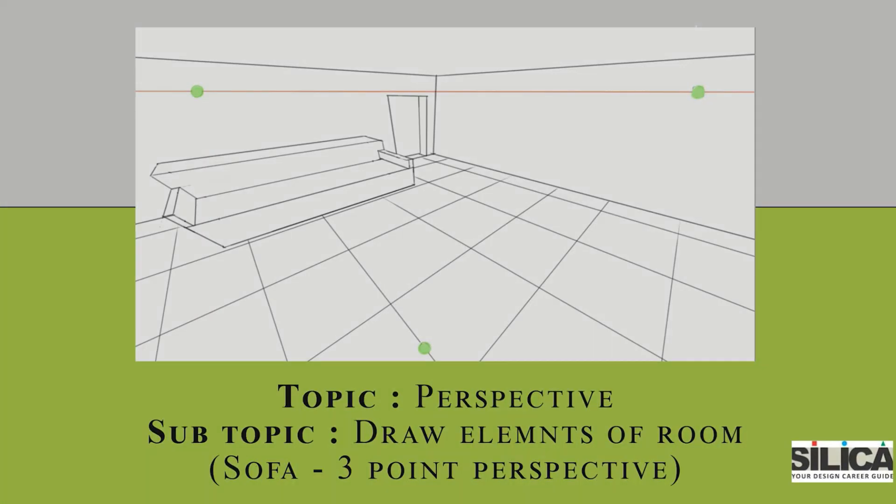Hello students. In this video we are drawing a sofa from a lizard's point of view in three-point perspective. Let's take an eye level on the top of the page, mark two vanishing points at the ends of the paper — one on the left corner and one on the right corner. The third point will be at the center of the bottom of the page.